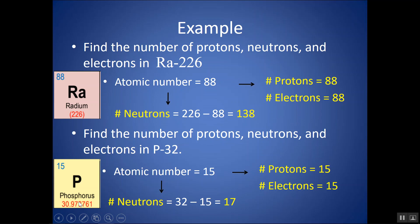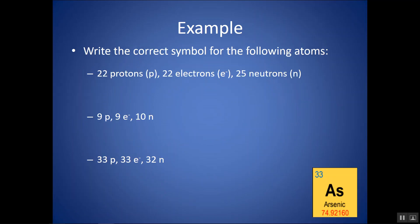Notice that this might not be the most abundant isotope — it's not the closest whole number to the atomic mass, and that's totally fine. Now let's practice going the opposite direction: write the correct symbol for the following atoms.